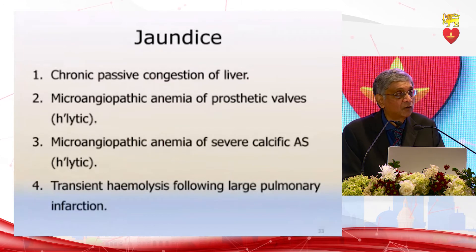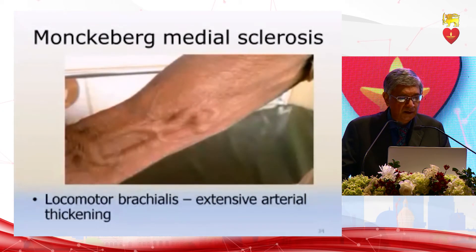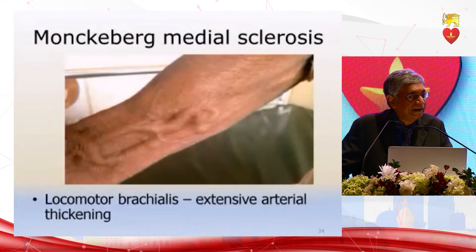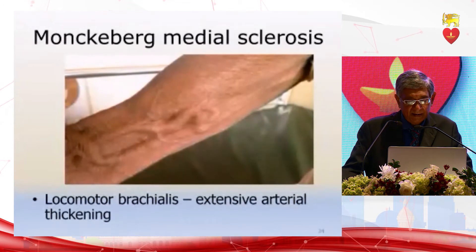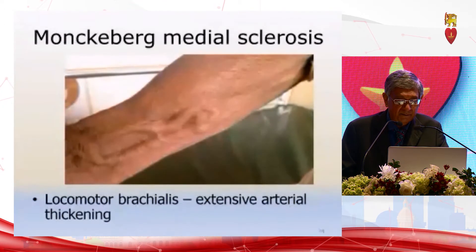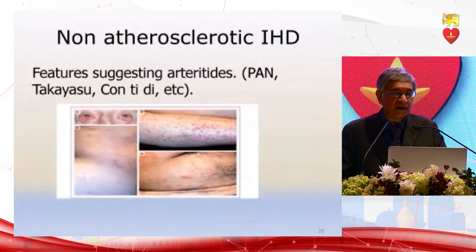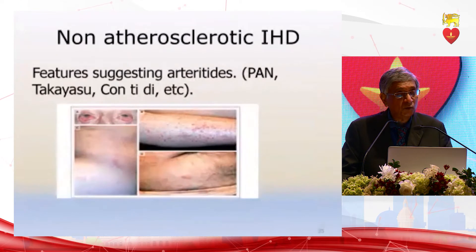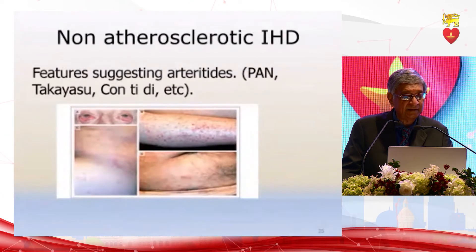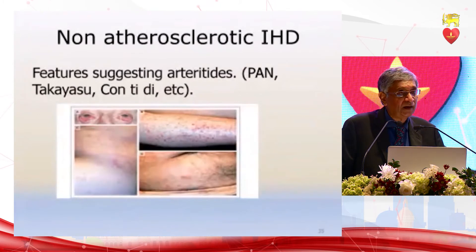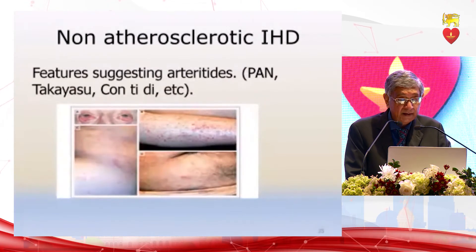There is also transient hemolysis following large pulmonary infarctions — all these are causes of jaundice caused by cardiovascular disease. Sometimes in the very elderly patient, Mönckeberg's medial sclerosis gives rise to locomotor brachialis, where you see the artery pulsating in the arm — this does not indicate any particular pathology other than extensive atherosclerosis. Remember that ischemic heart disease can be non-atherogenic — it can be due to arteritis — and therefore polyarteritis nodosa, Takayasu's disease, and connective tissue diseases can cause similar skin features.